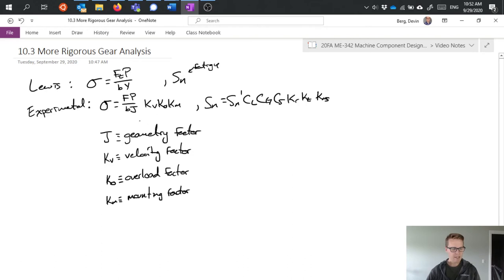Alright, so I have these factors built into this stress equation. Now, in my fatigue analysis equation, I have a load factor, which for most gears is going to be equal to 1. I have, oops, I have a gradient factor, which is going to be equal to 1, if p is greater than 5, and 0.85, if p is less than or equal to 5.